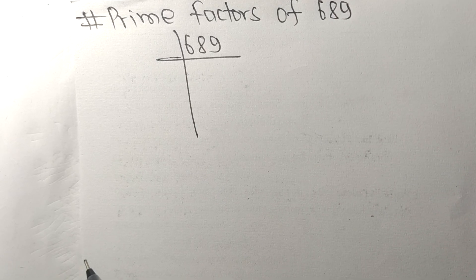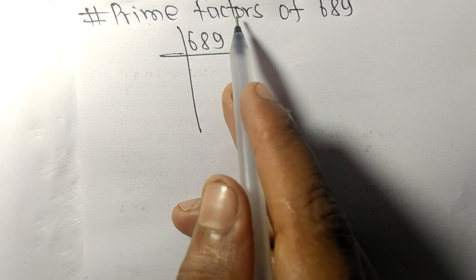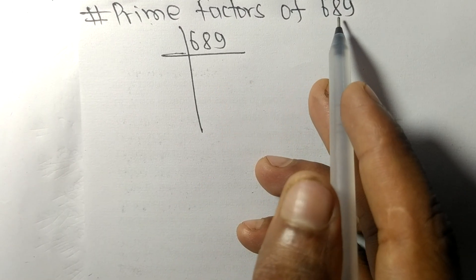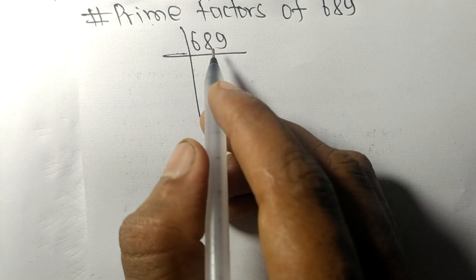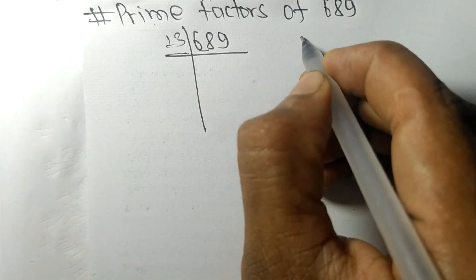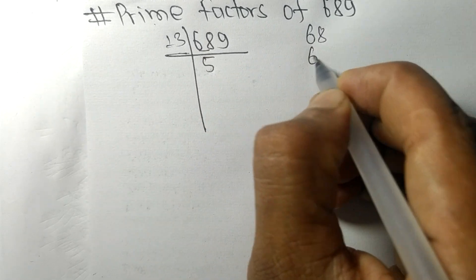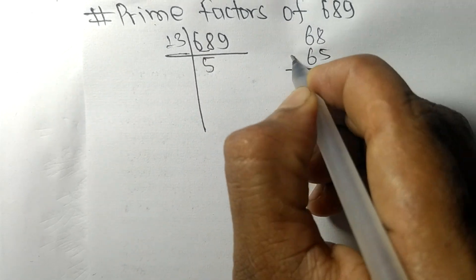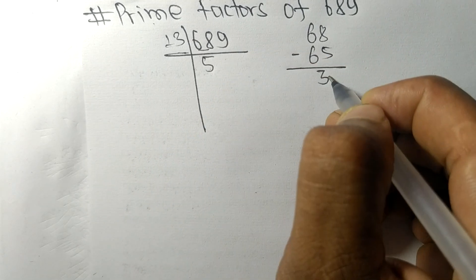Today in this video we shall learn to find the prime factors of 689. 689 is exactly divisible by 13. Here is 68, 13 times 5 means 65, and on subtracting we get 3 and this 9.